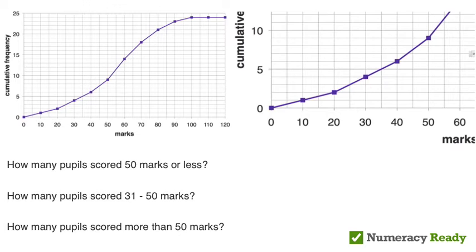So I've zoomed in on the right to the graph on the left so that we can start to identify some of the features. We're looking at the number of pupils here who scored different marks in the test. So let's look at this point here.